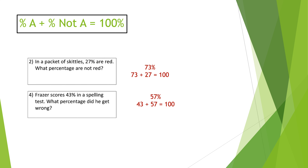Fraser scores 43 percent on the spelling test — what percentage did he get wrong? 57 percent, because 43 and 57 add up to 100. You just do 100 minus 43 equals 57. The percent of A plus the percent of not-A adds up to 100. This is useful in problems about sales — if someone paid 120 dollars after a 25% discount, the 120 pairs with the 75% they did pay, not the 25% off.